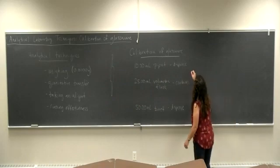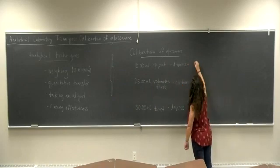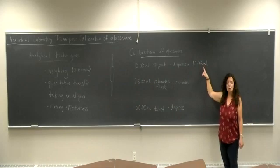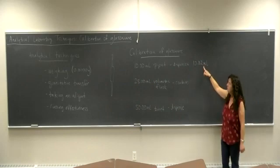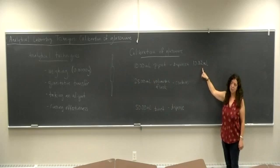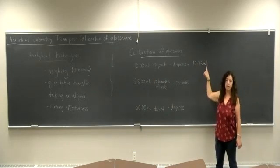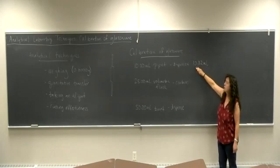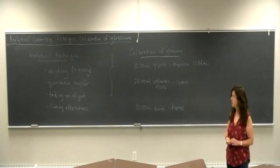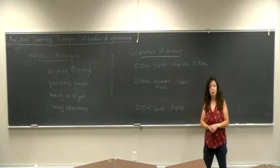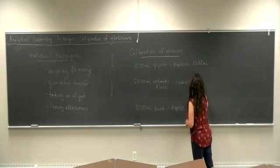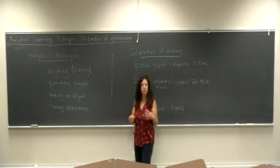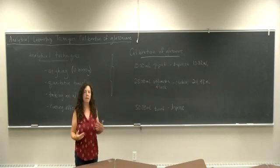You might find out that your 10 ml pipette dispenses 10.02 milliliters. This will be important to know for when you're using in your calculations, with four significant figures accuracy, how much that pipette dispenses. Likewise, you might figure out that your volumetric flask contains 24.98 milliliters. That's completely fine, there's nothing wrong with the glassware. But now that we know when we calibrate.